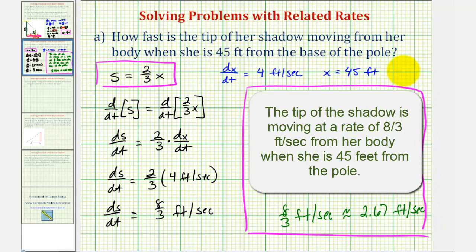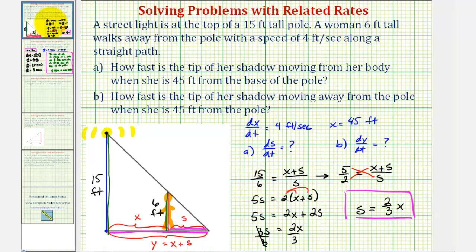Before we go to part b, notice that ds/dt is not dependent on x — it equals a constant times dx/dt. So regardless of how far she is from the pole, ds/dt will not change as long as she's walking at the same pace. Now for part b, we want to determine how fast the tip of her shadow is moving away from the pole when she is 45 feet from the pole, which is dy/dt.